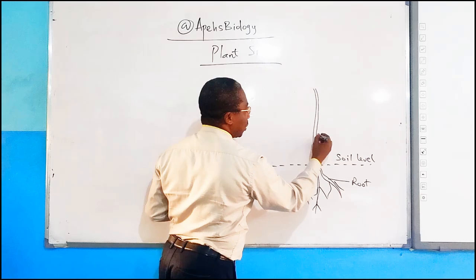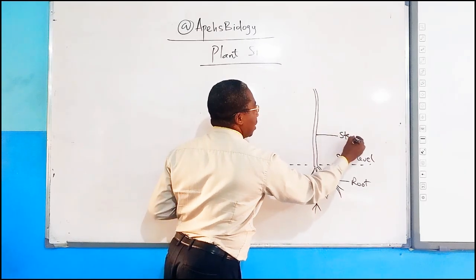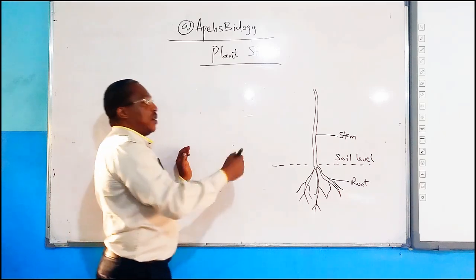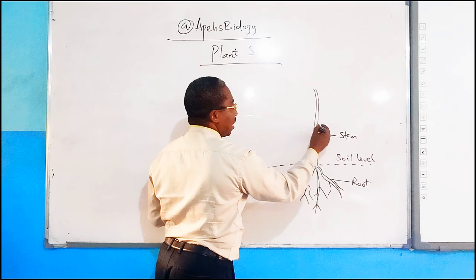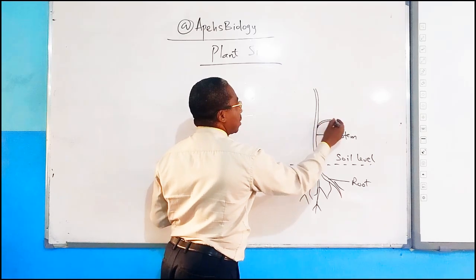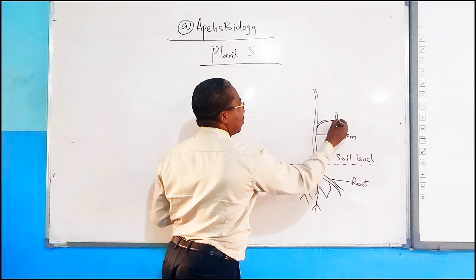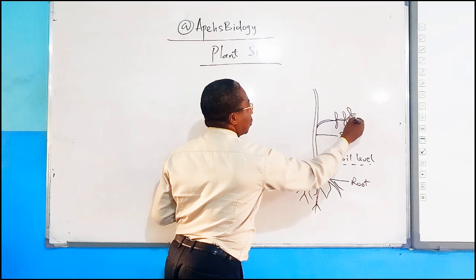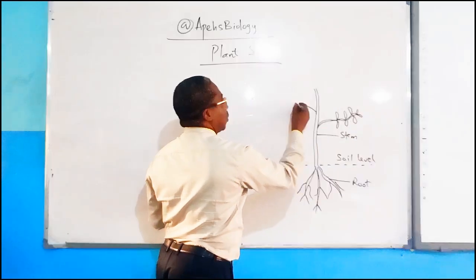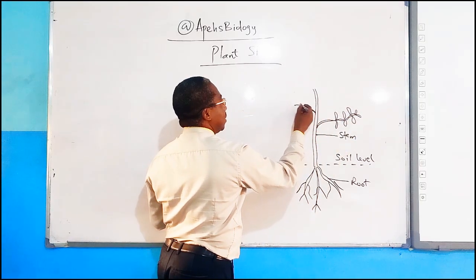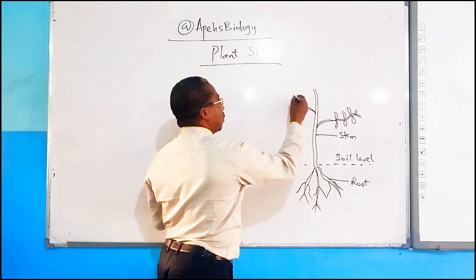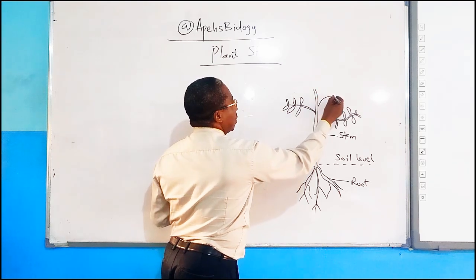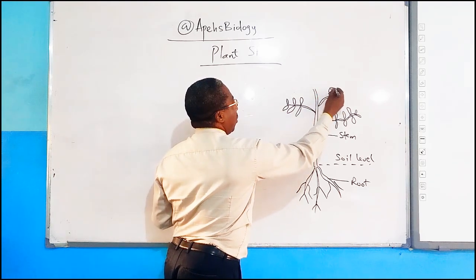This whole structure you see growing above the soil is referred to as the stem. The stem of every plant is known as the shoot system. Interestingly, this same stem usually starts producing branches, and the branches start producing very beautiful leaves. You also have other branches coming out, and you find leaves coming out of those as well. All these are coming out of the stem. Still on the stem, you can also see that some plants will have beautiful flowers on the stem.